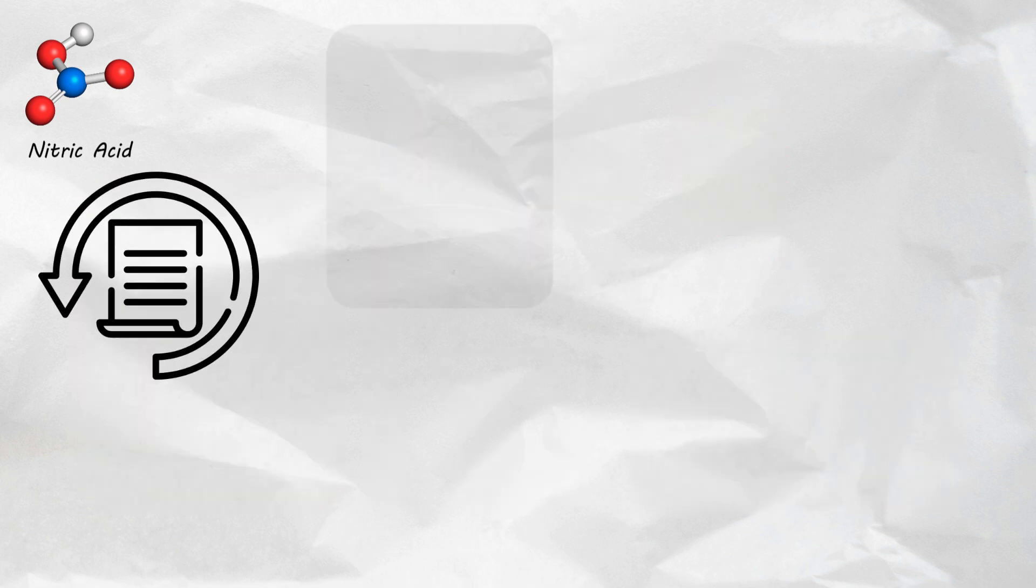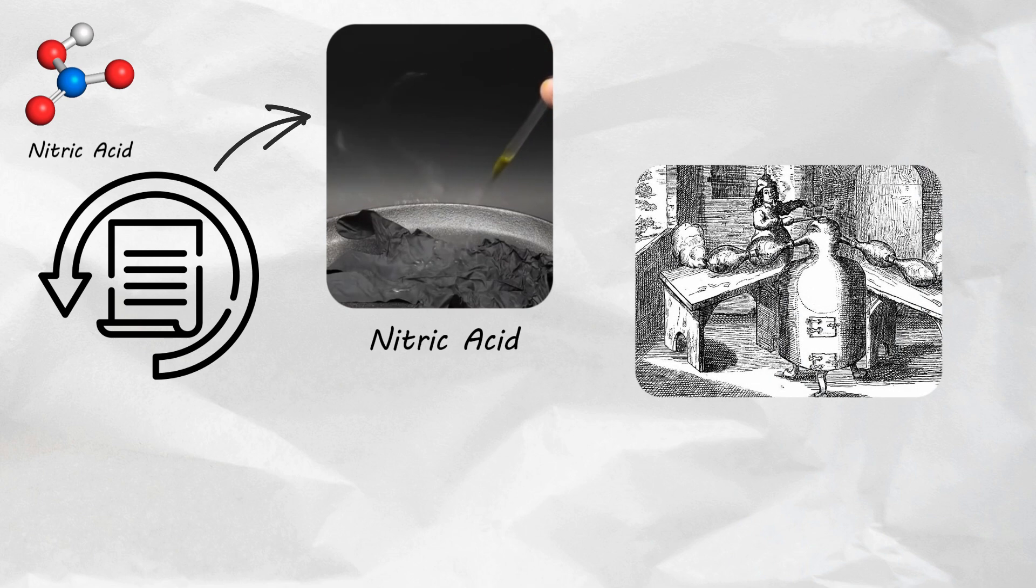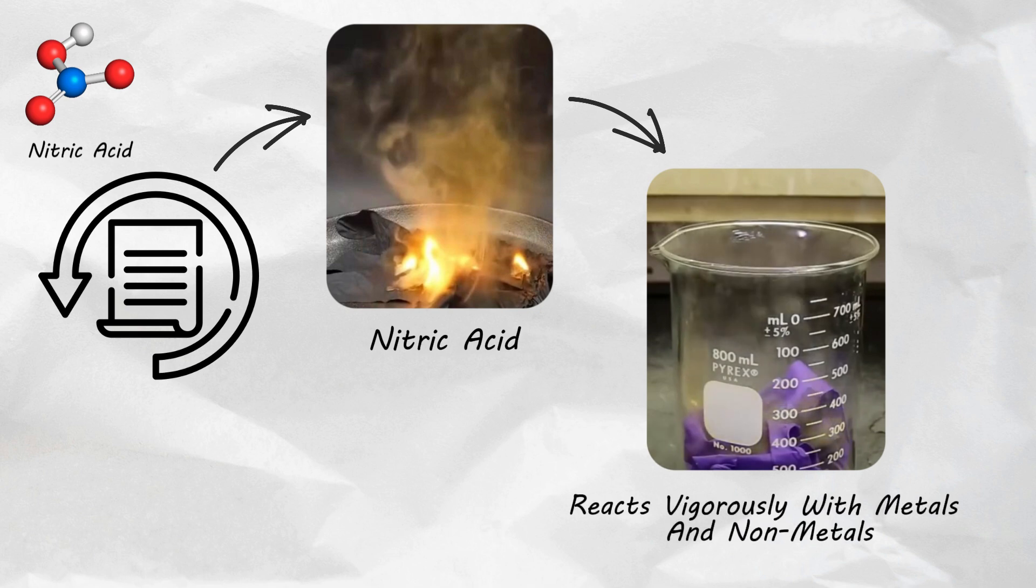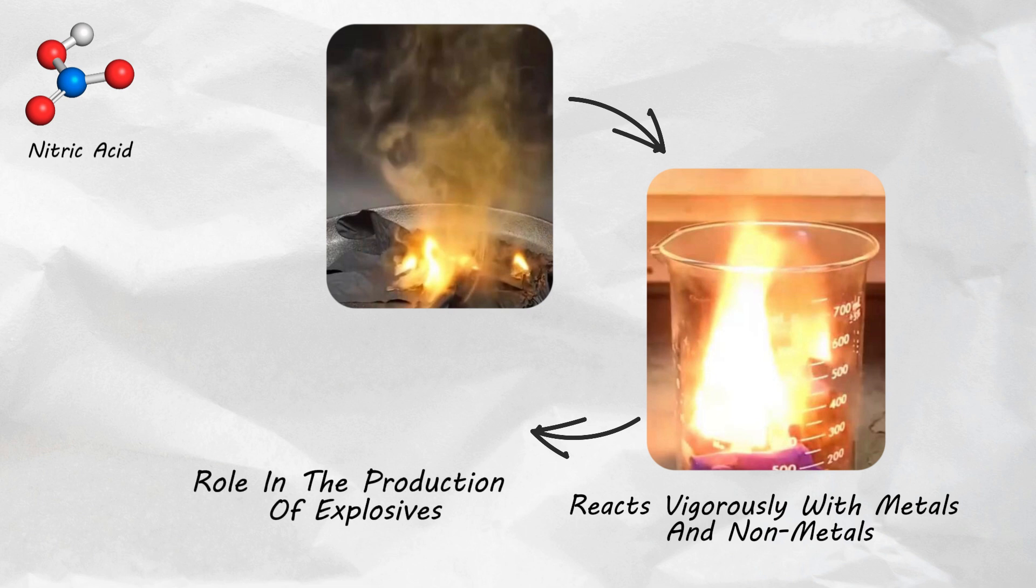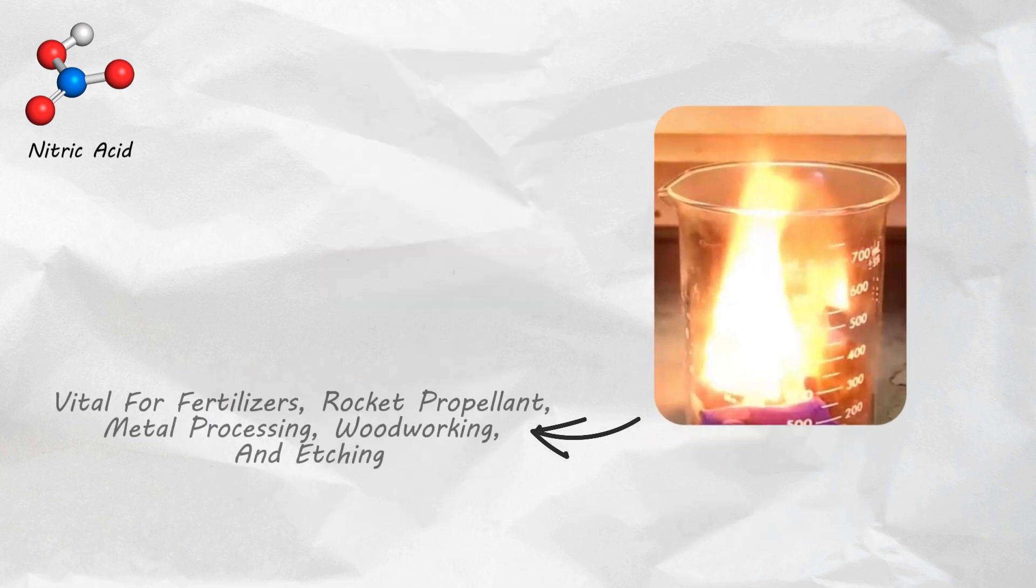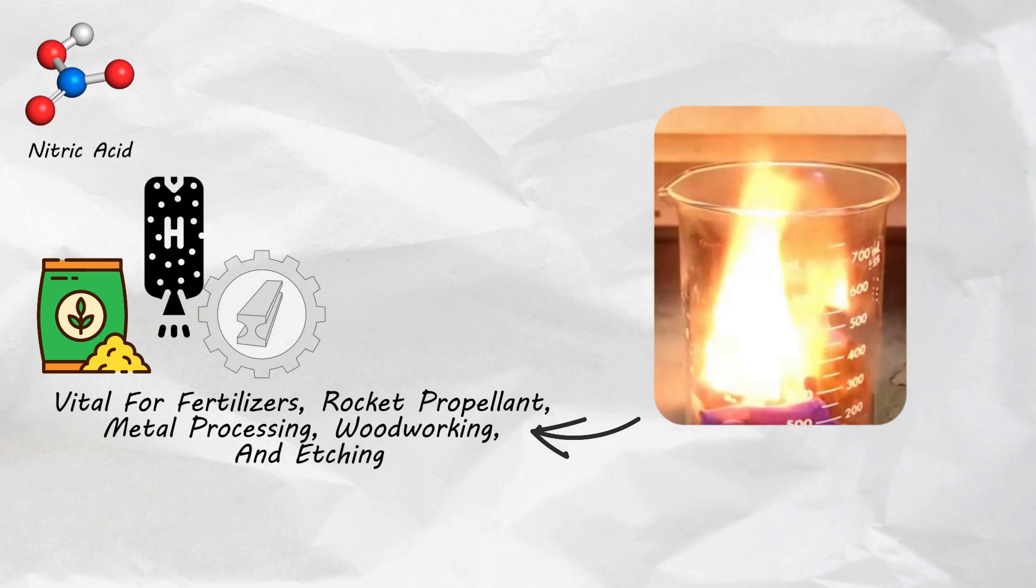Historical records suggest nitric acid's discovery traces back to the 13th or 10th century alchemy. It reacts vigorously with metals and non-metals, often explosively. It also has a direct role in the production of explosives, particularly gunpowder and TNT. Industrially, it's vital for fertilizer production, rocket propellant, metal processing, woodworking and as an agent.